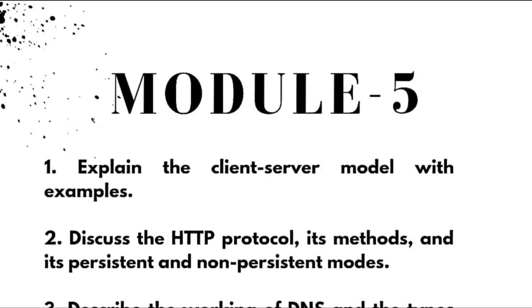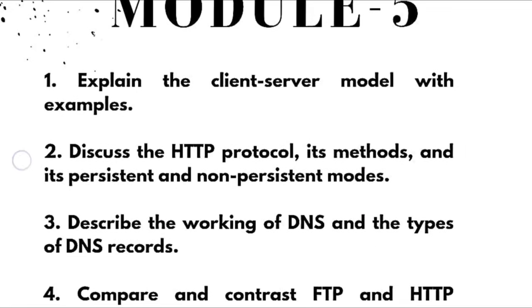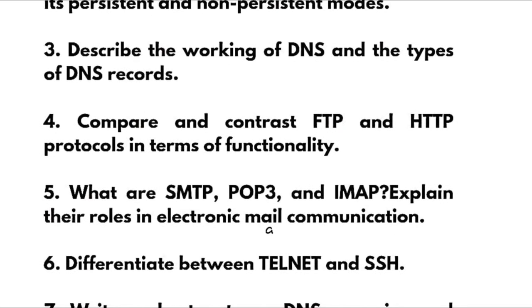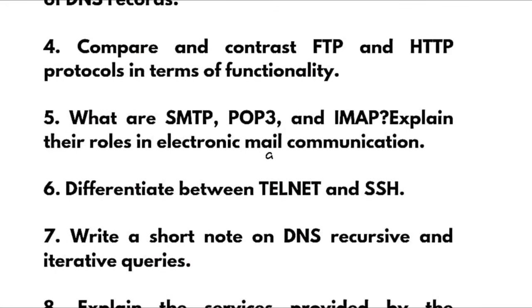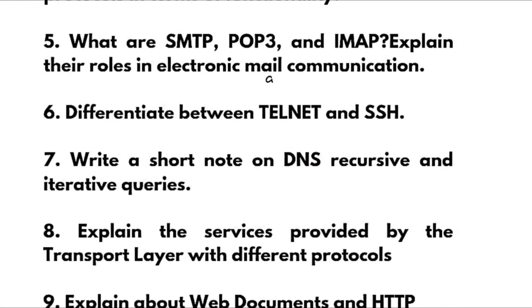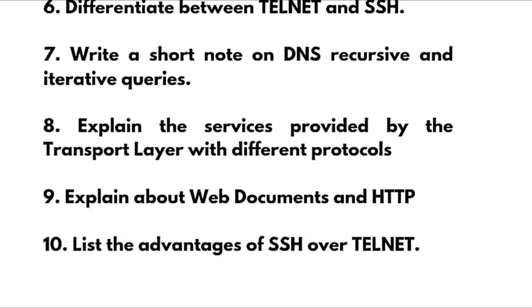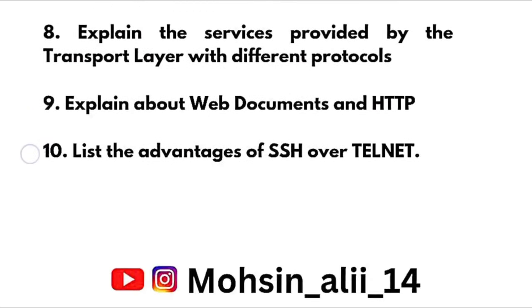Module 5 questions: explain the client-server model with examples; discuss the HTTP protocol, its methods, and its persistent and non-persistent modes; describe the working of DNS and the types of DNS records; compare and contrast FTP and HTTP protocols in terms of functionality; what are SMTP, POP3, and IMAP — explain their roles in electronic mail communication; differentiate between Telnet and SSH; write a short note on DNS recursive and iterative queries; explain the services provided by the transport layer with different protocols; explain web documents and HTTP; list the advantages of SSH over Telnet.